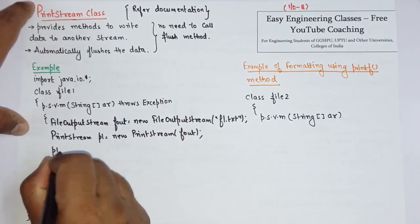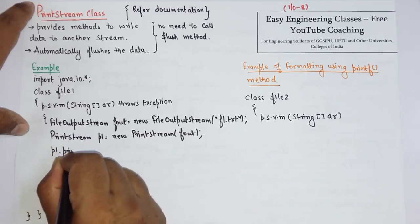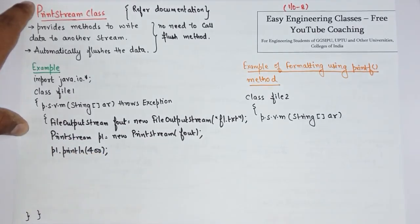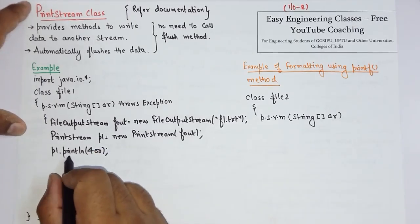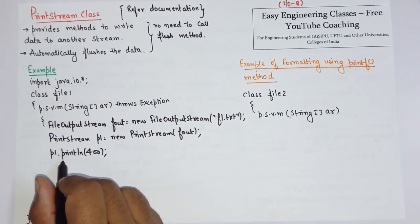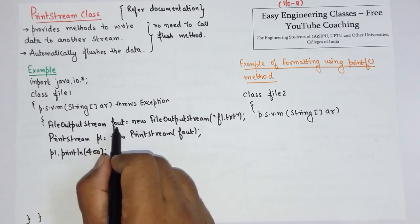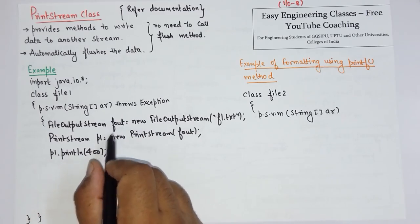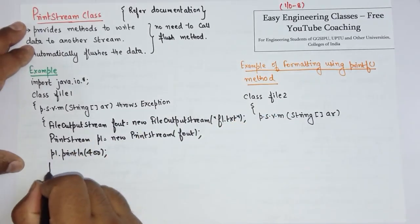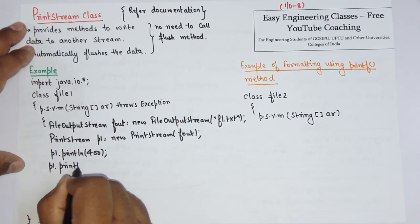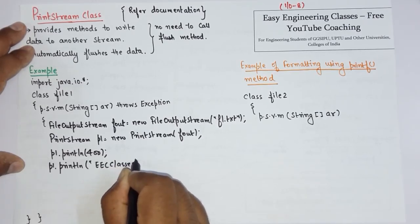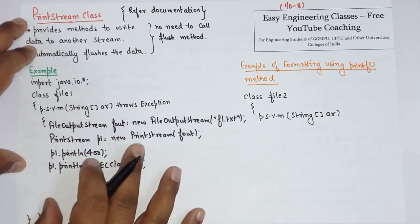Now if I have to write, I can call the println method. This println method actually automatically flushes the data in the FileOutputStream object. So the values are now getting written in f1.txt. Similarly I can write or flush p1.println for string values. This is a very convenient way of writing contents to the file.